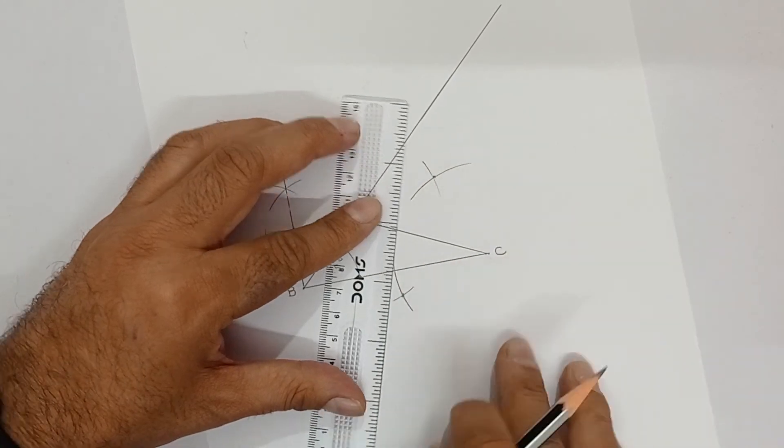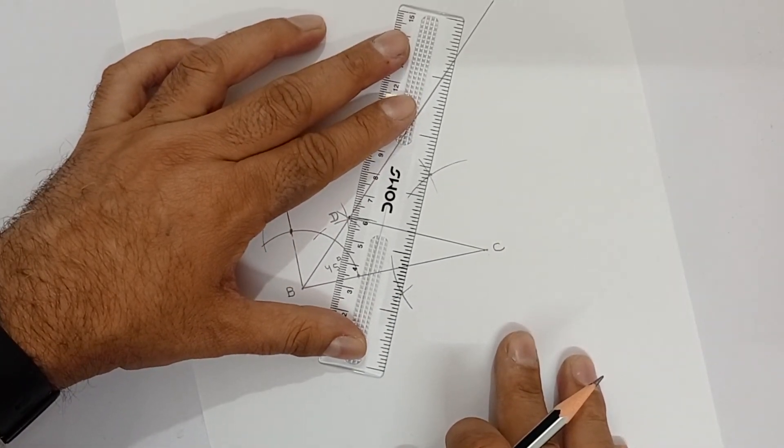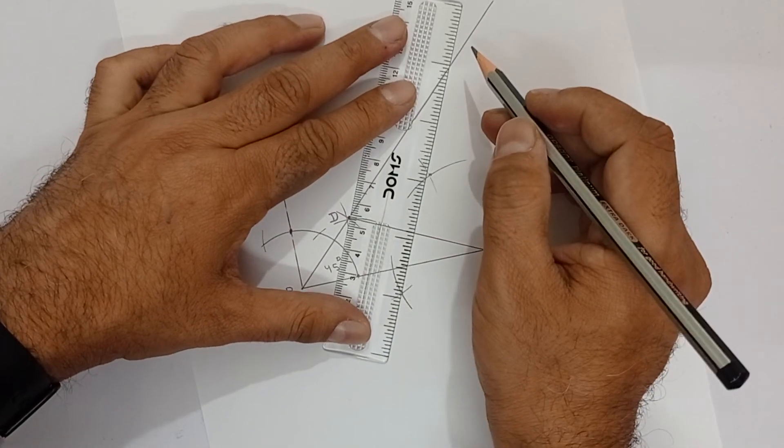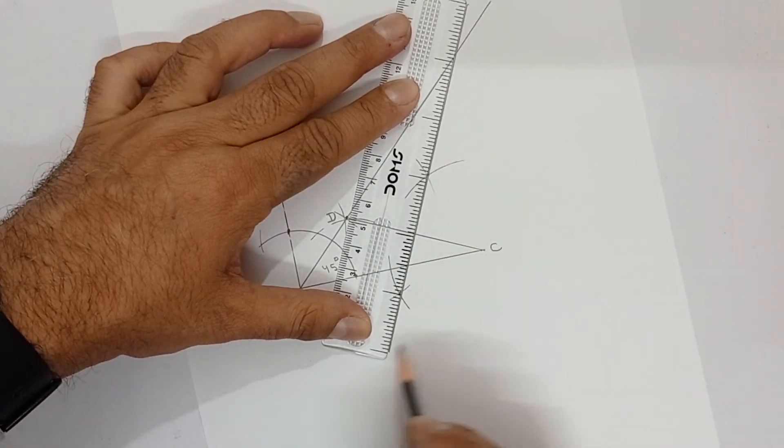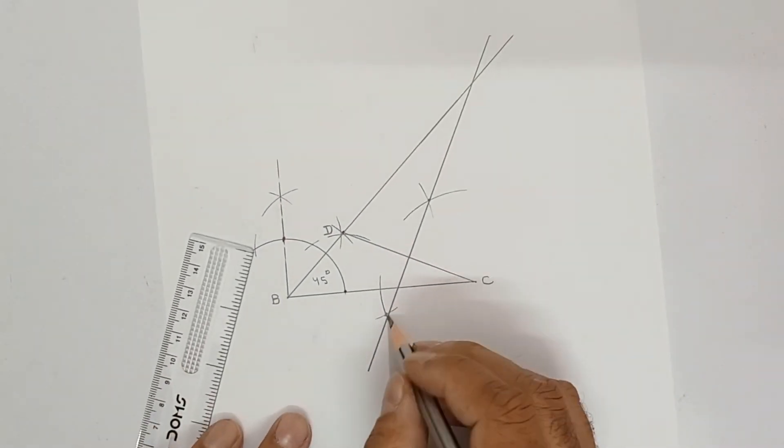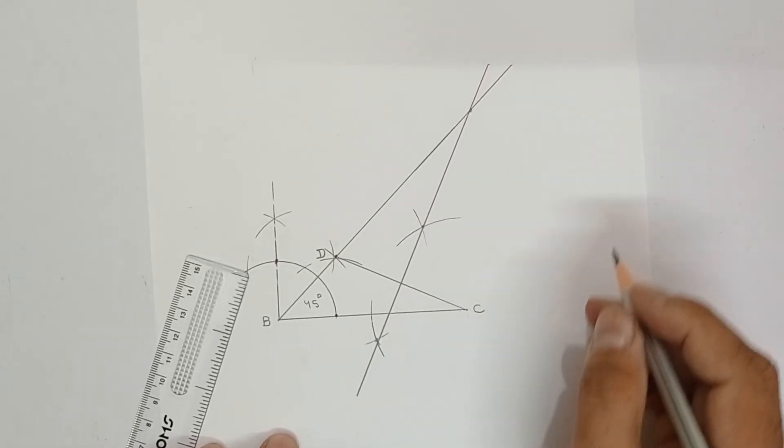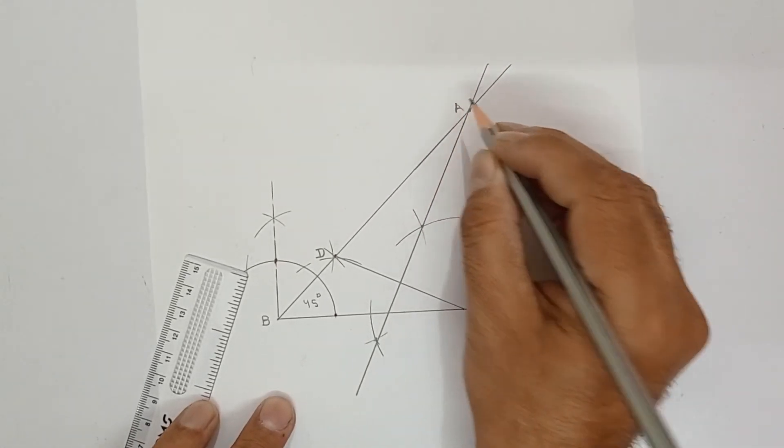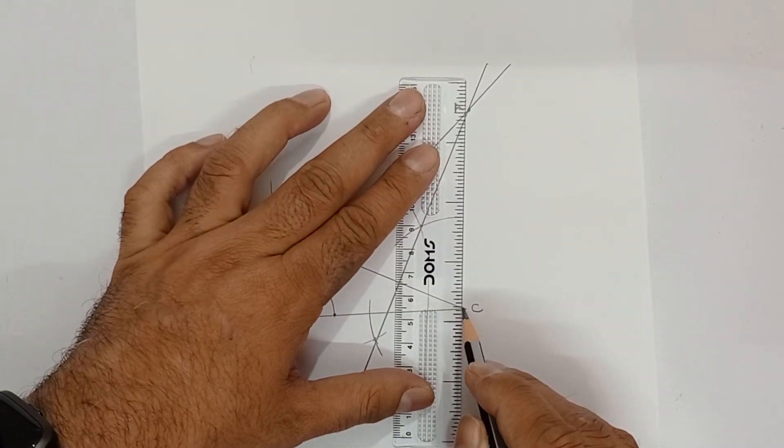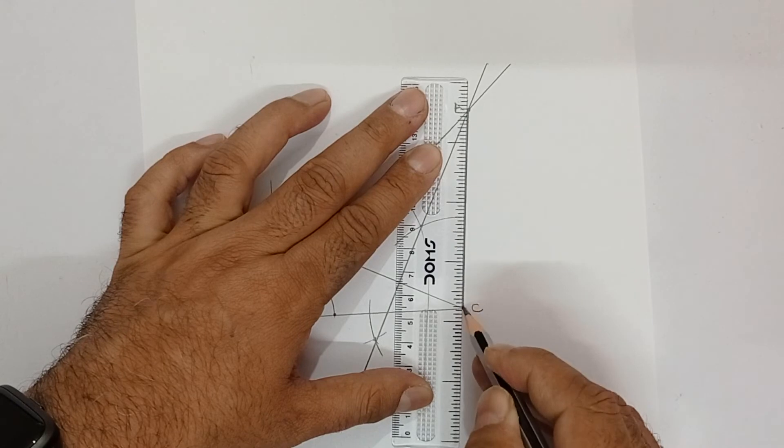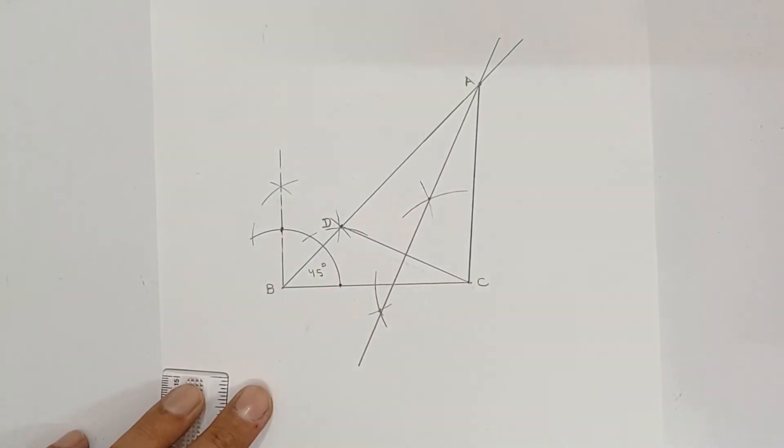Now you have to join these two. So, dot and dot. And joining, extend as much as you can. So, see this. I am taking it forward like this. And did this joining. Now, what do you observe? It is cutting here. This point will be referred as A point. And now you have to join A, C with solid line. Like this. So see, triangle ABC has been made.